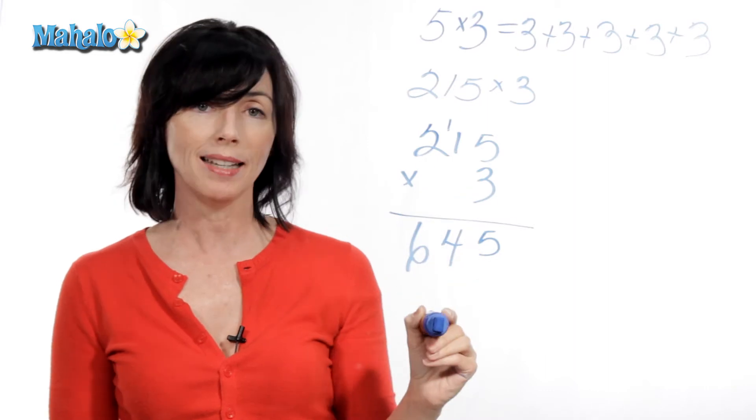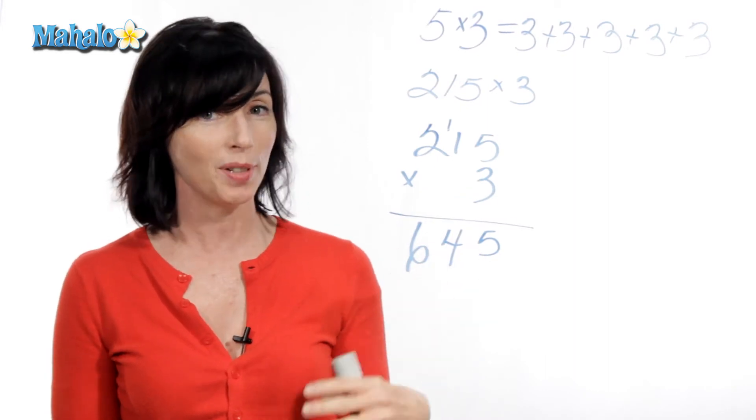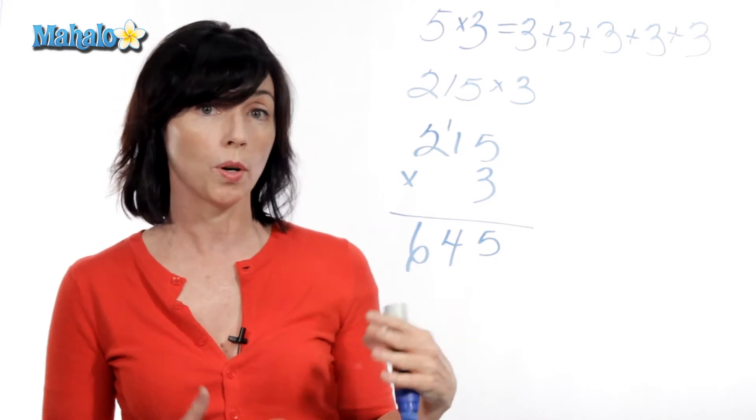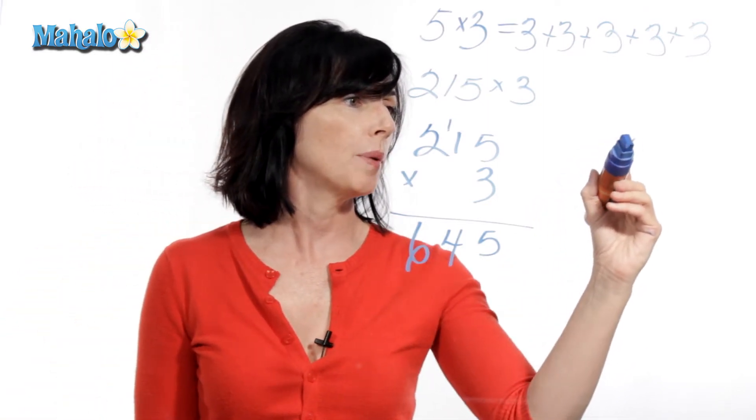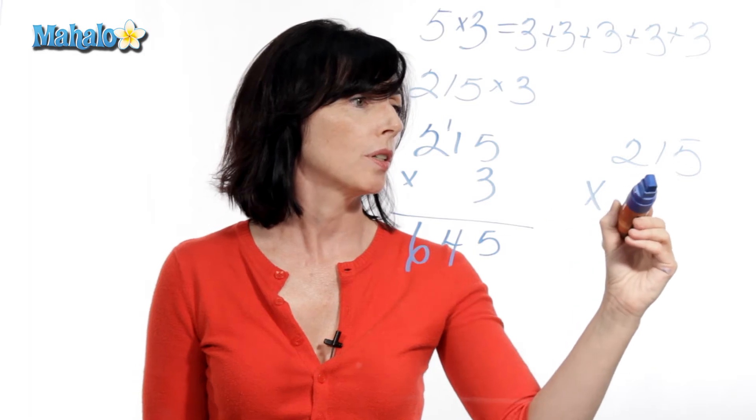So 215 times three is equal to 645. That's a lot better than trying to add three to itself 215 times. Now, this will also work for multiple digits. So let's look at another example. Let's say we have 215 times 24.